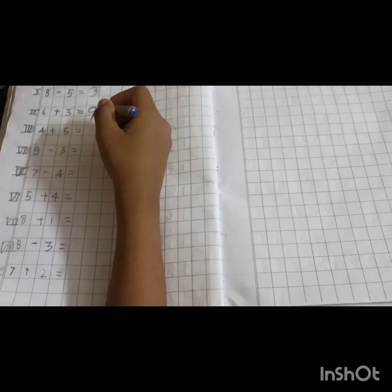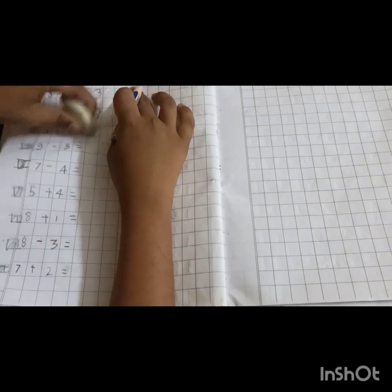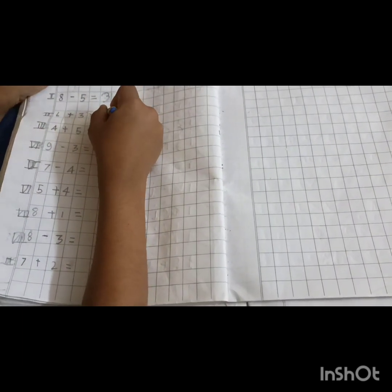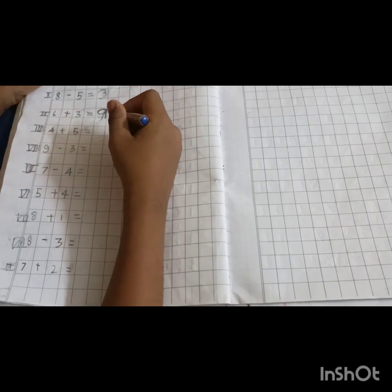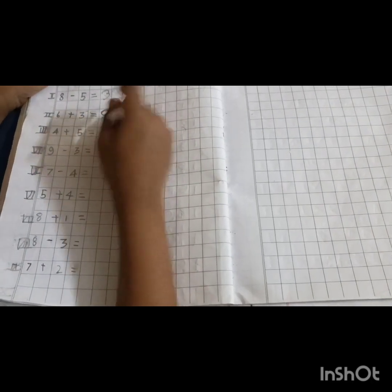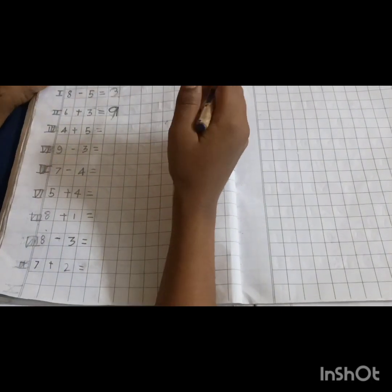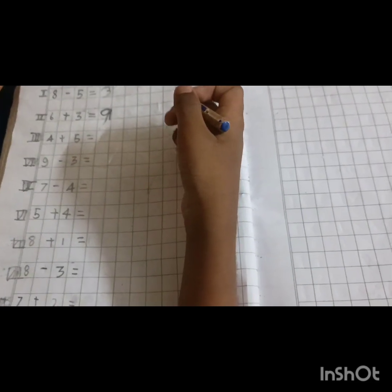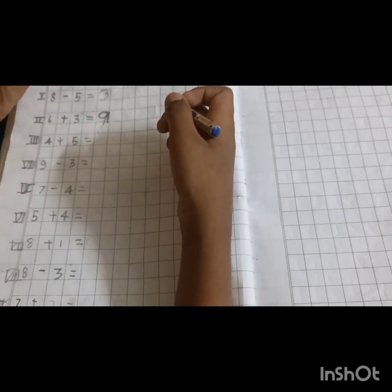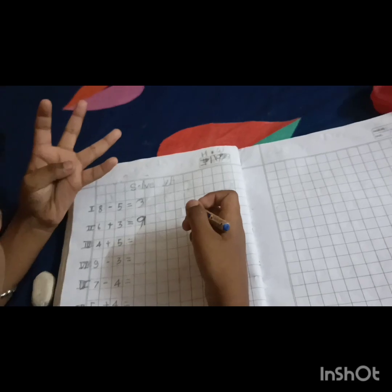Go to the next question. What are you doing? Box. 5 plus 4. 6, 7, 8, 9. Very good. Put 9.